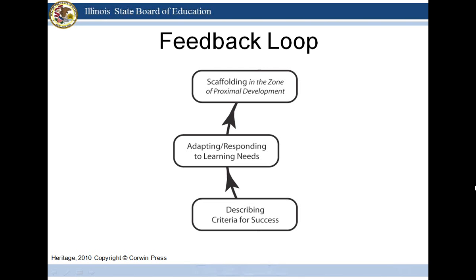Now, we have clearly described the criteria for success and how that criteria has been adjusted. We're modifying our plans and adapting and responding to the learning needs of our students. This takes us into the differentiated instructional process — scaffolding our lessons and actually targeting our instruction to the zone of proximal development for each of our students or group of students.